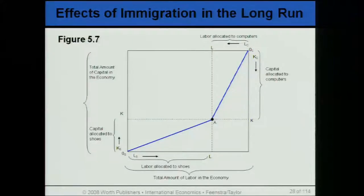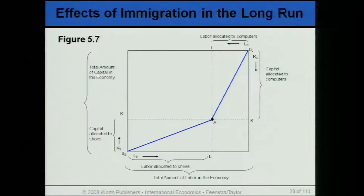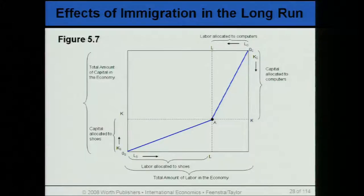In this diagram there are two industries: shoes and computers. The shoe industry is labor intensive, while the computer industry is capital intensive. You can see that the slope of the line O-S-A is smaller than the slope of O-C-A. The total amount of labor in the economy runs from this origin to the end; labor allocated to shoes is this portion, and the rest is allocated to computers. The capital allocated to shoes is from O-S to K, and the capital allocated to computers is O-C to K. So the shoe industry employs more labor while the computer industry employs more capital.